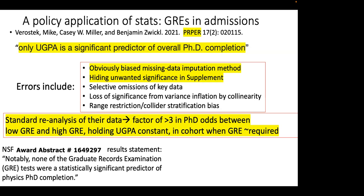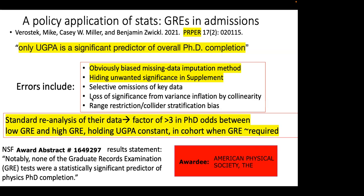As for where this misinterpretation appears: if you look at the NSF site describing the award that funded this research, it has a clear statement of the outcome — 'None of the GREs were statistically significant predictors of PhD completion' — presented as a clear result, when the data flatly contradict this. Who would submit such a fallacious conclusion of their research to NSF? The grantee is listed as the American Physical Society. This is something for which we are responsible, and about which I think we ought to do something.